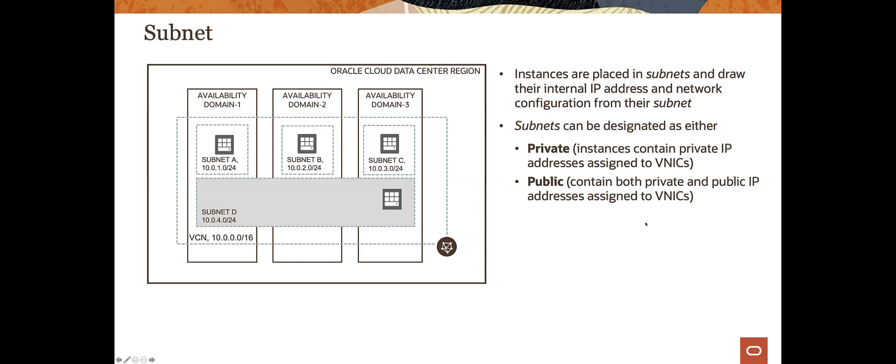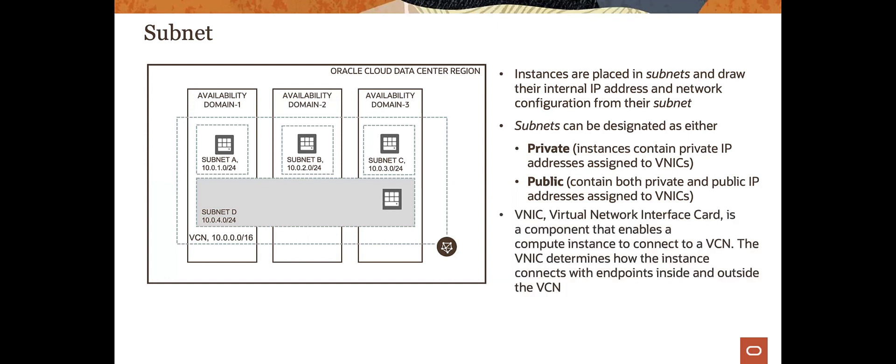When looking at subnets, you can have both public and private subnets. A public subnet will have both a private IP address and also public IP addresses assigned to what we call VNICs — Virtual Network Interface Cards. A VNIC is a component that enables your compute instance to connect to a VCN, and it determines how the instance connects with endpoints inside and outside your virtual cloud network.